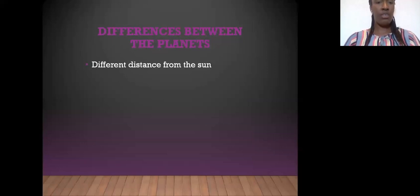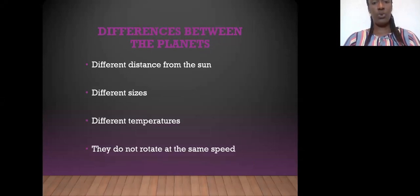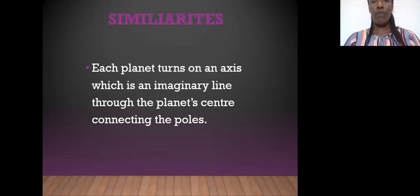Based on the video, you should have noticed that the planets are different in distances from the Sun. They are different in size, they have different temperatures, and they do not rotate at the same speed. However, all of them have one similarity. Each planet turns on an axis, which is an imaginary line through the planet's center connecting the poles.